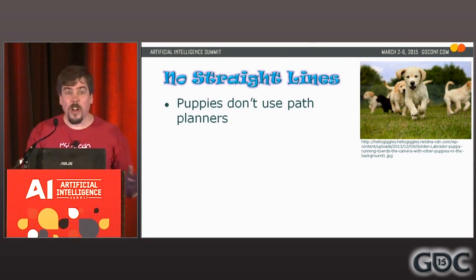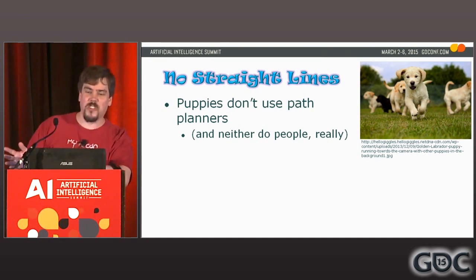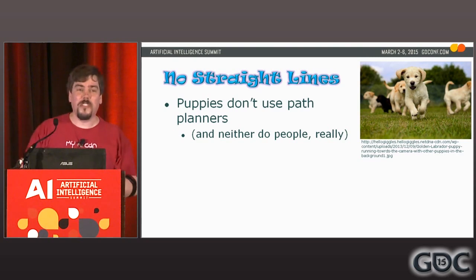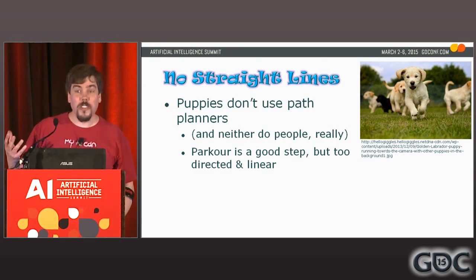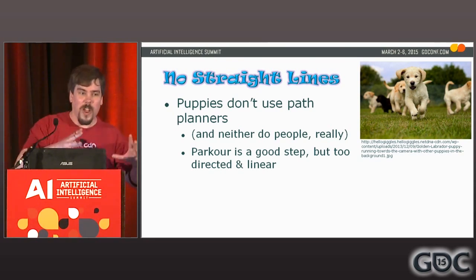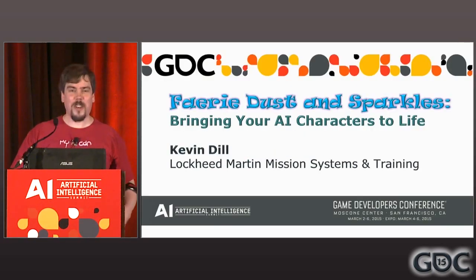Puppies don't use path planners — they weave all over the place. Humans don't use perfect straight lines and crisp turns either, unless they're marching in the military. Whatever you can do to fuzz the path helps. We used flow fields with the puppies to get fuzzy paths — they have other problems and I don't necessarily recommend it, but it gave us a lot of wander. Parkour is interesting for the way it blends running, jumping, rolling, crawling, swimming, and climbing into smooth motion — but I want that blending with much more free, natural movement.